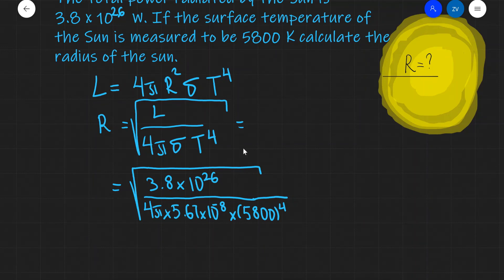Multiplied by the surface temperature, which is 5,800 raised to the power of 4. Quite a typical error would be to forget to raise this to the power of 4. So, please be careful with this. And let's put this into a scientific calculator.